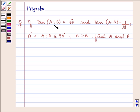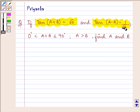It says, if tan(A+B) = √3 and tan(A-B) = 1/√3, 0 < A+B ≤ 90°, A > B, then we need to find A and B.